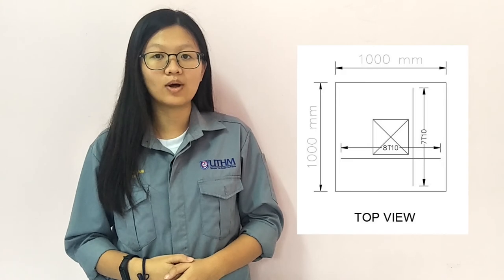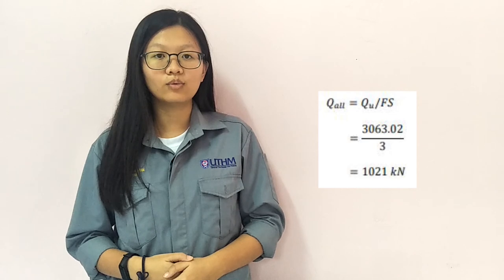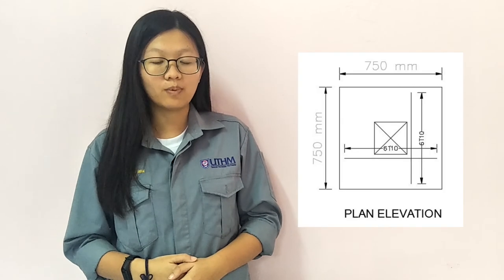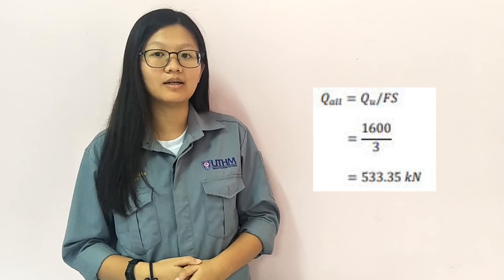We then suggest another dimension of 1m, and the value of QO is 1,021kN, which fits group A columns. However, we found that the 1m pad footing would only be used for one column, and we feel that it is not practical. So we tried another dimension of 0.75m, and we get a bearing capacity of 533kN.